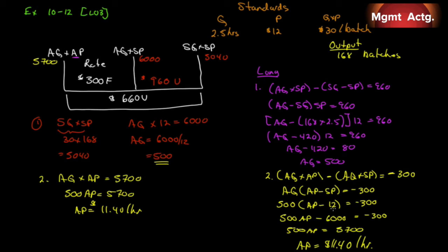This is just algebra. There are two ways to do it: fill in the numbers and work backwards until you have every number you need, or go straight to the formulas and use algebra to get an answer. Since we're given the standards, figure out AQ, bring it back to the first formula, and solve for AP. Long way or short way — doesn't matter. That's exercise 10-12.